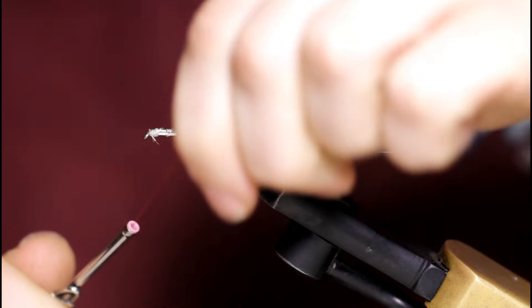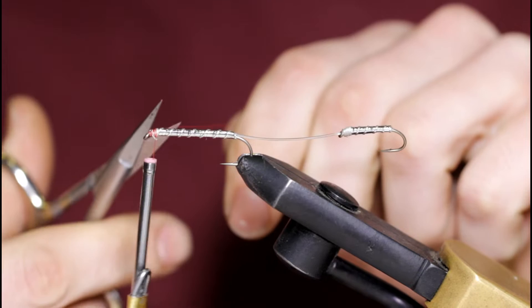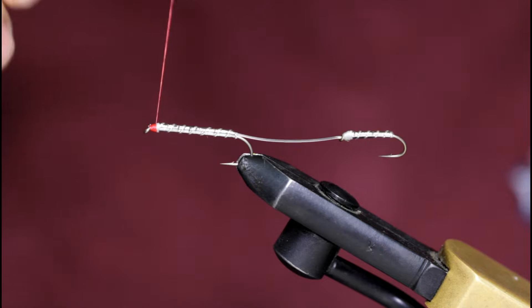Now I've got some red thread in 70 denier. That's why I don't build up too much of a bulky head. Just going to wrap this on.